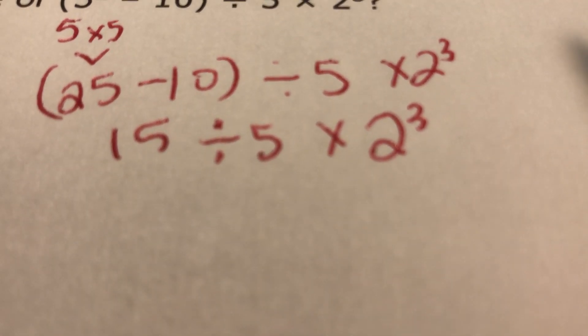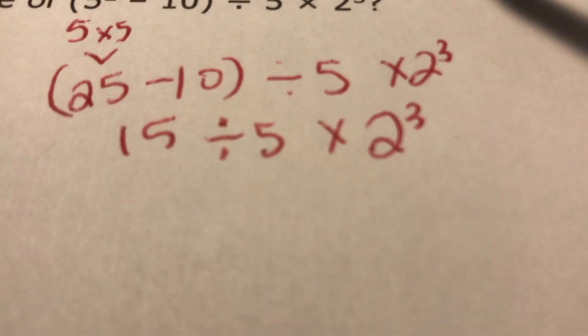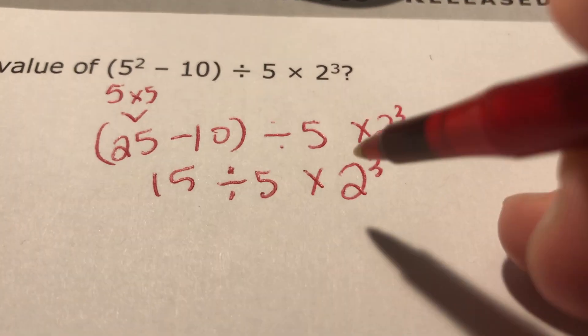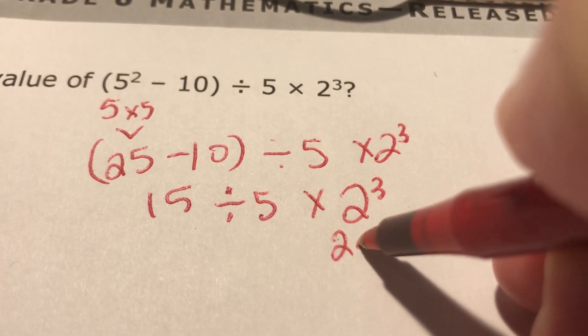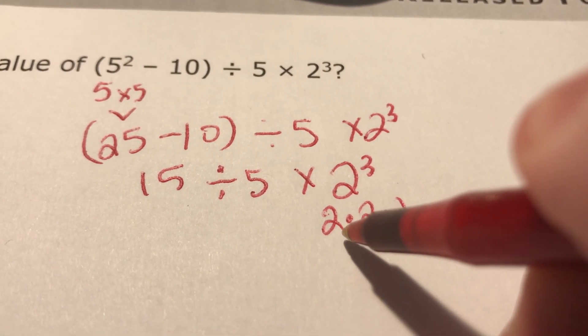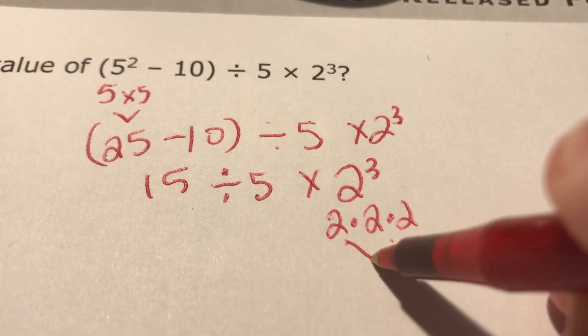Now, in the order of operations, the next thing is not going left or right, but the exponents. The exponents, 2 to the 3rd power is the same thing as 2 times 2 times 2. And 2 times 2 is 4 times 2 is 8.